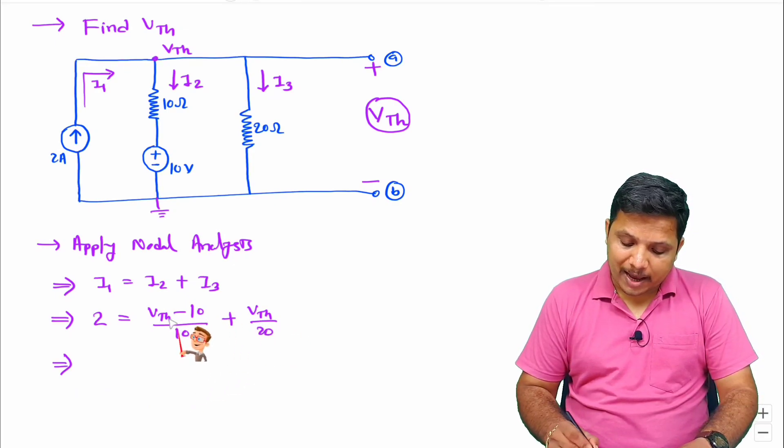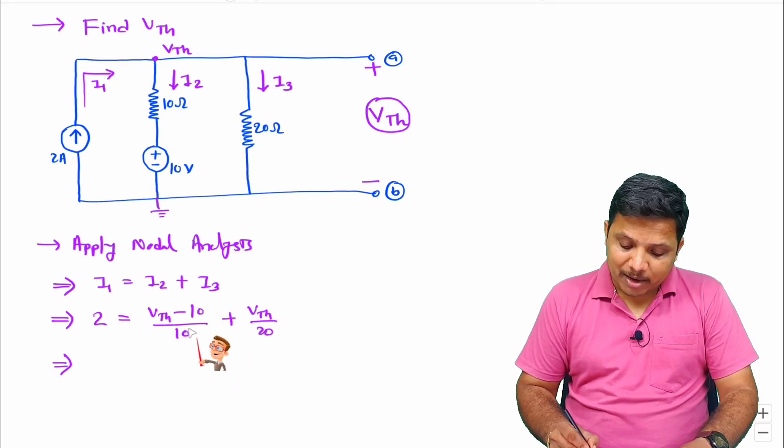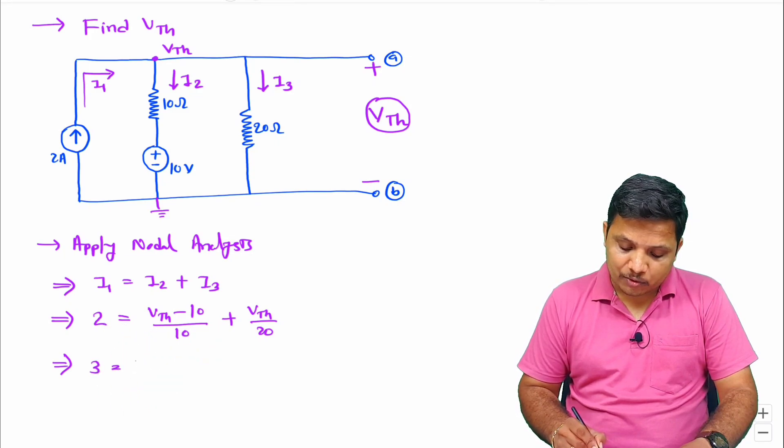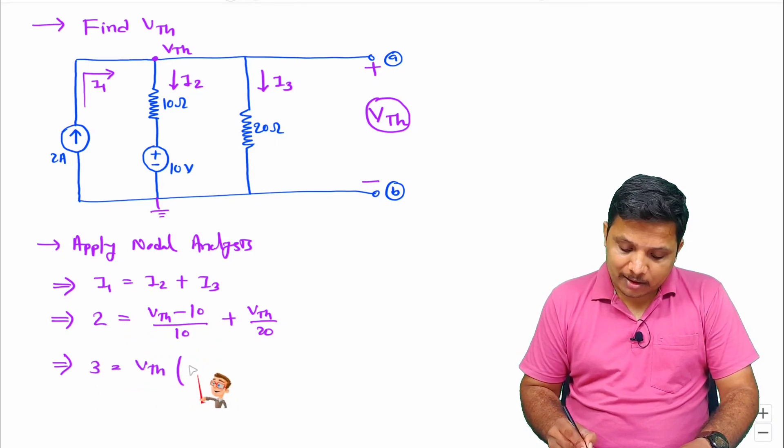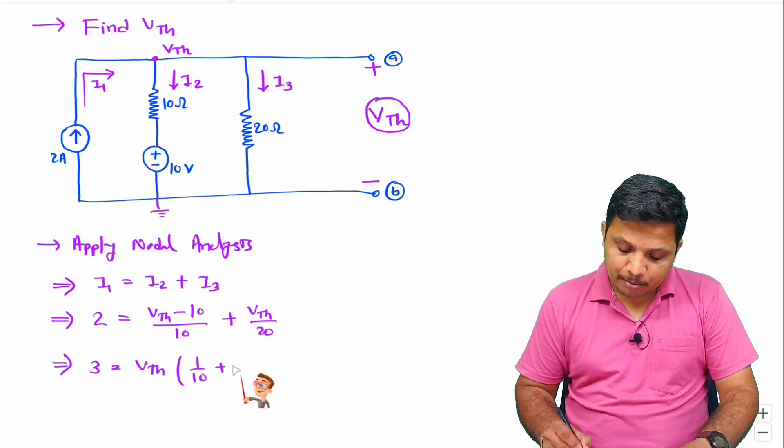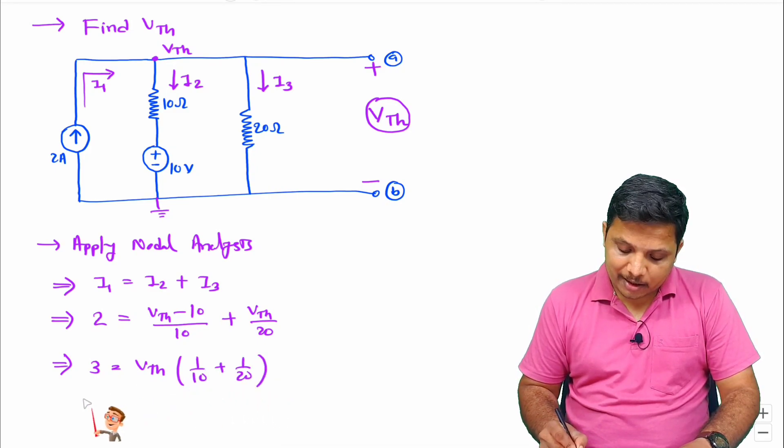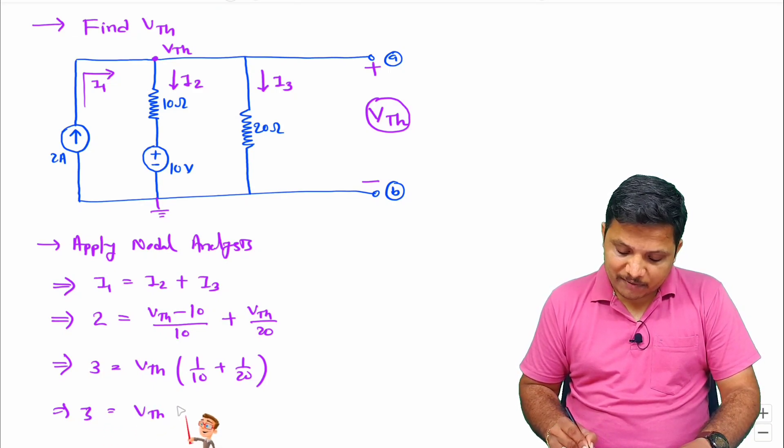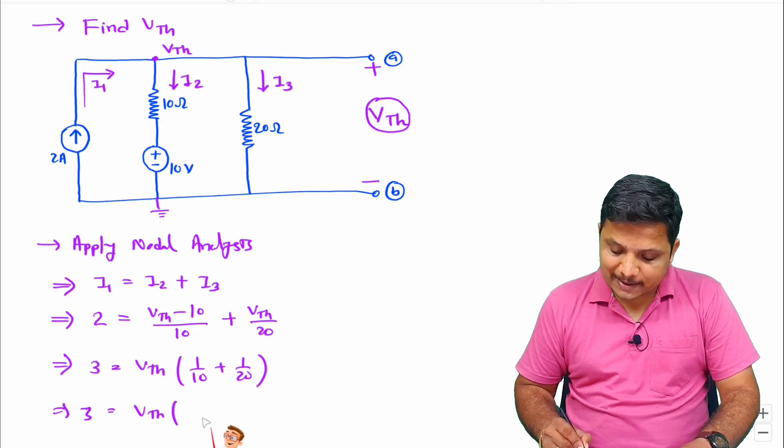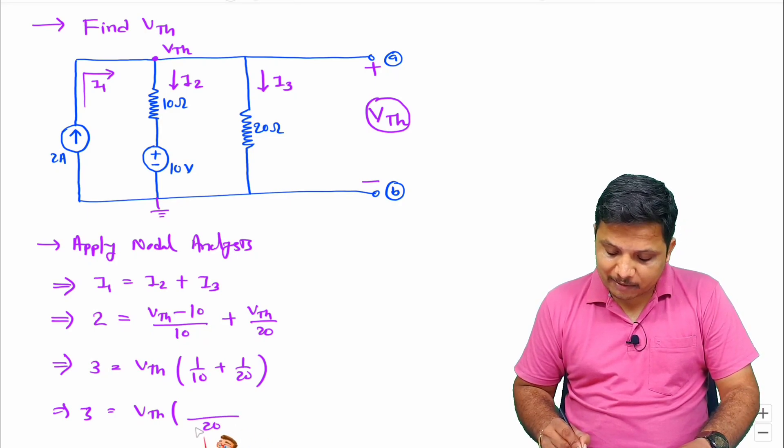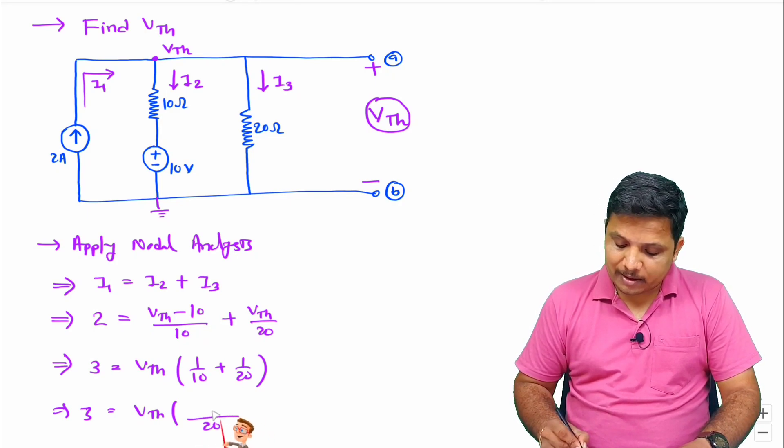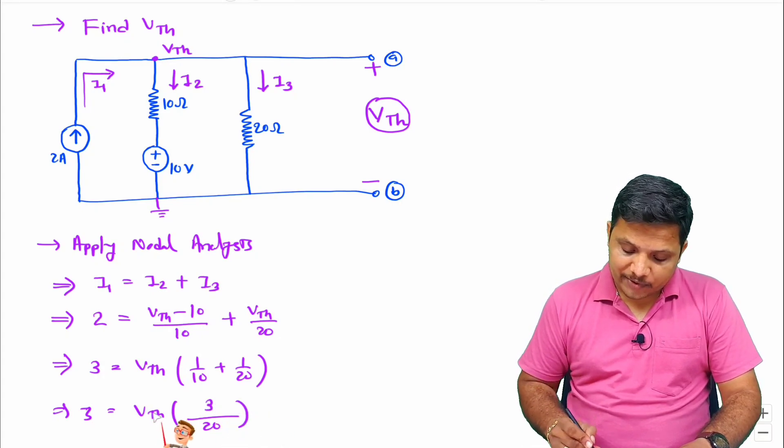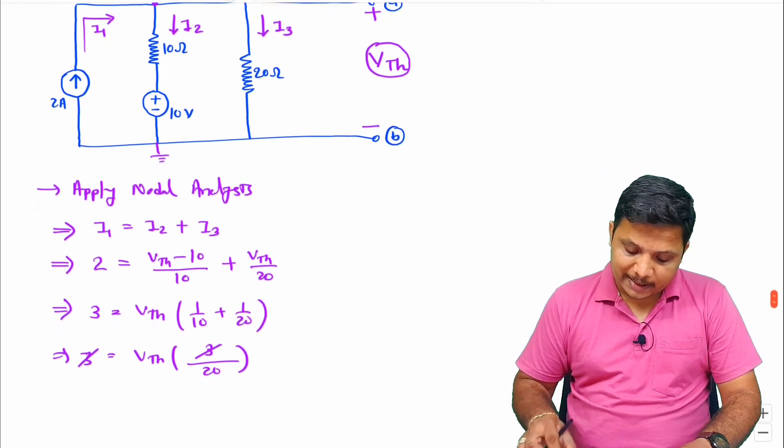So let us simplify this to have VTH. So 10 by 10, that is one, will go on the other side. So 3 equals VTH common into 1 by 10 plus 1 by 20. Now if you further simplify this, then this will be VTH into, if you take LCM, then here 20 will be our LCM. And here we'll be having 3. So I can say VTH equals 20.